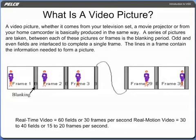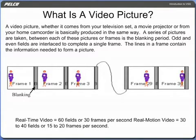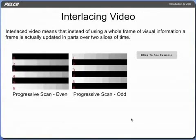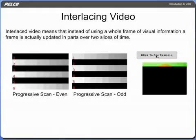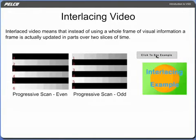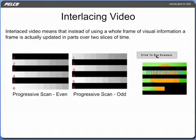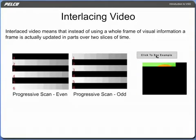A video picture, whether it comes from your television set, a movie projector, or from your home camcorder, is basically produced in the same way. A series of pictures are taken. Between each of these pictures or frames is the blanking period. Odd and even fields are interlaced to complete a single frame. The lines in a frame contain the information needed to form a picture. This new picture will occur at a time that is slightly advanced from the previously viewed picture. Interlaced video means that instead of using a whole frame of video information and presenting these stills in rapid succession to simulate movement, a frame is actually updated in parts over two slices of time.